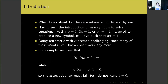Doing arithmetic with alpha seemed challenging since many of the usual rules I knew didn't work anymore. For example, zero times zero times alpha is zero times alpha, which is one, because zero times alpha is one by definition. But if I multiply the rightmost zero and alpha together first, I get one on the right, and then zero times one is zero — but zero is not equal to one, and so the associative law must fail. Perhaps we could have a system where one was equal to zero, but I don't want that. I don't want to change the rules already established for existing numbers like zero and one.